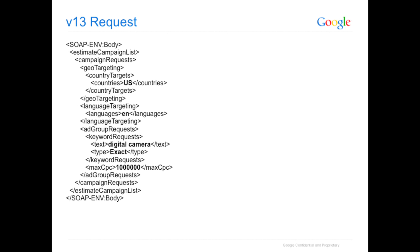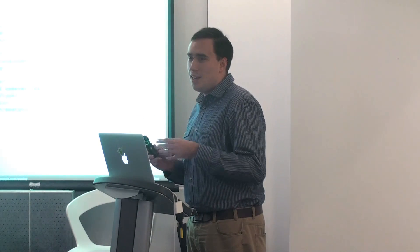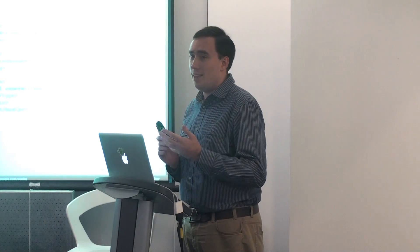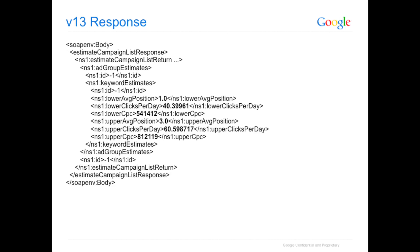The key point about the traffic estimator in general is that it always does keyword-level estimates. It's not going to give you an estimate on a whole campaign or ad group being successful — it's always per-keyword estimates, but with the ability to add campaign and ad group-level data to shape those estimates to be more accurate. What you got back was information like this: average position in a range — in this case between one and three — and some clicks and CPC data.